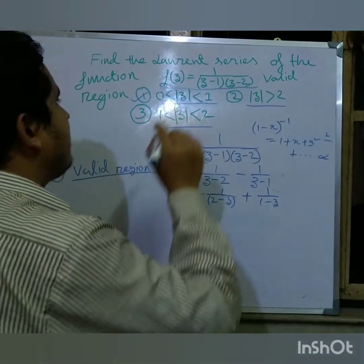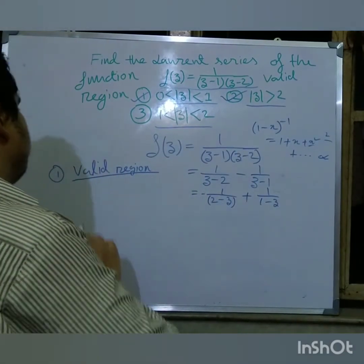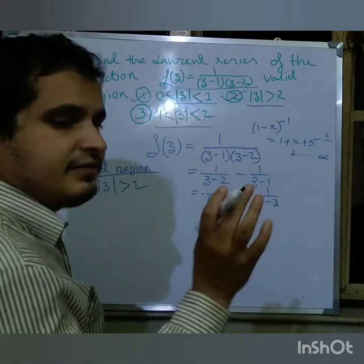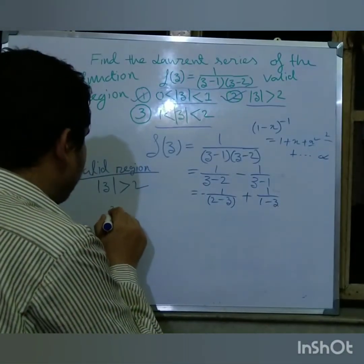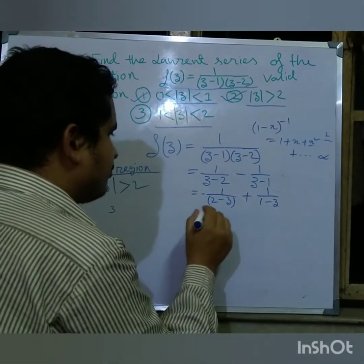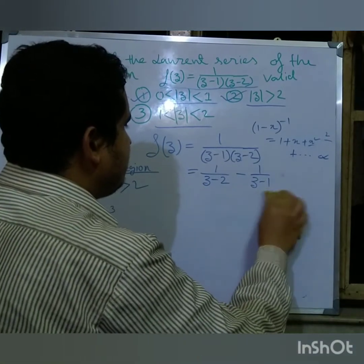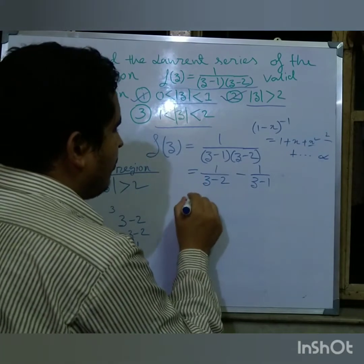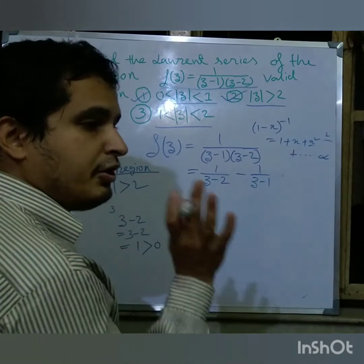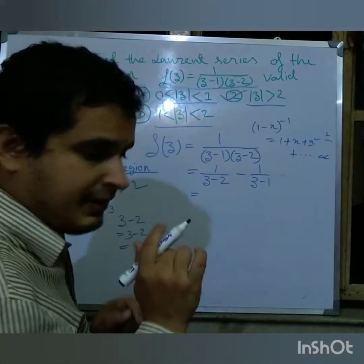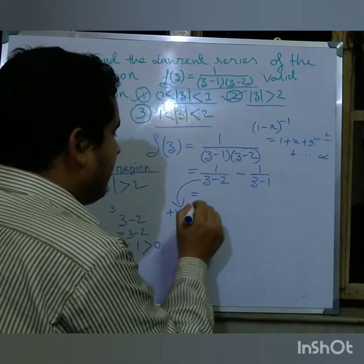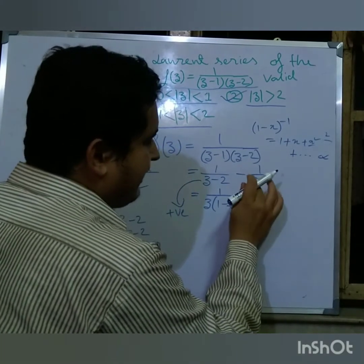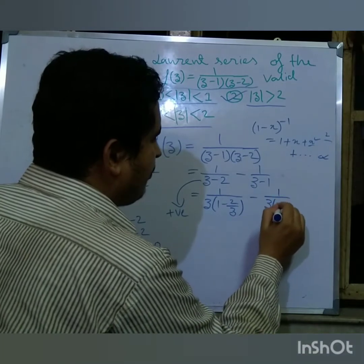Now I move to case number 2: |z| greater than 2. I test z equals 3. Substituting into (z minus 2): 3 minus 2 equals 1, which is positive. When the value is positive, the technique is slightly different. For a positive value I write 1 over z times (1 minus 2/z) and for (z minus 1) I write z times (1 minus 1/z).